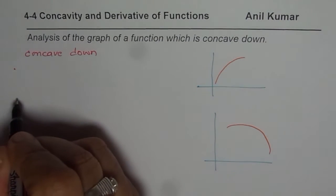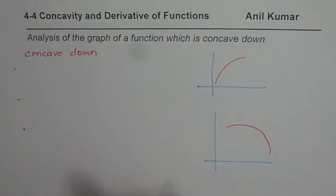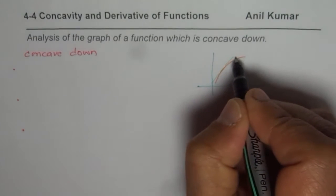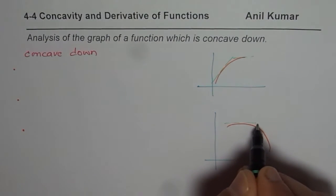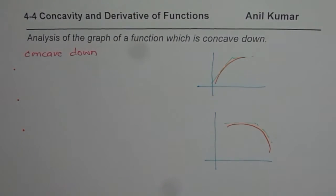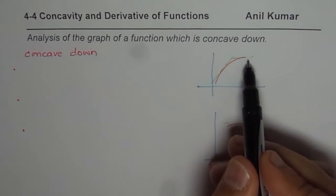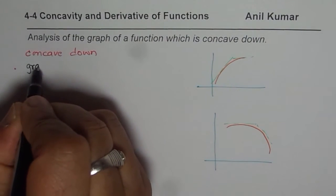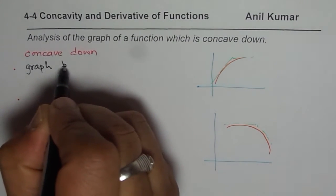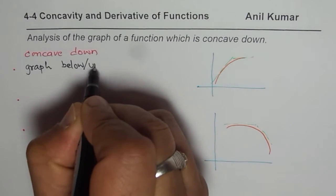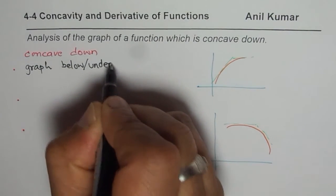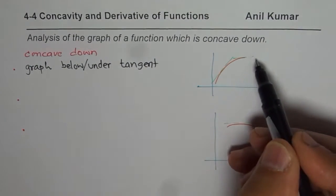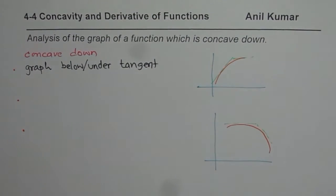The characteristics you will observe in a concave down graph are as follows. If you draw a tangent at any point on this graph, you notice that the graph of the function is below the tangent line. So the first thing is: the graph is below or under the tangent line. At any point, the tangent is above the graph.